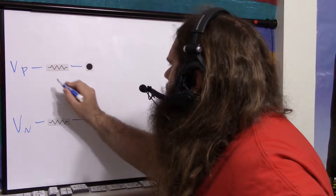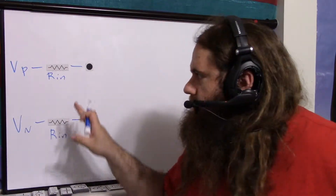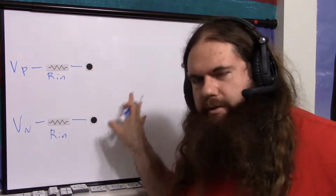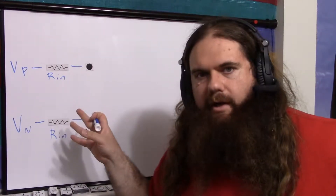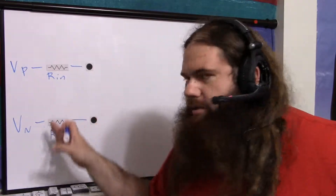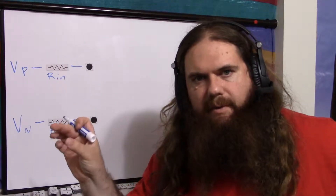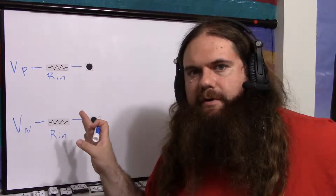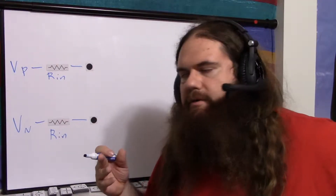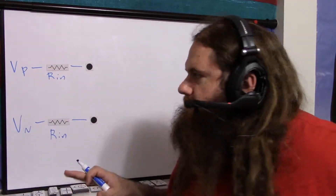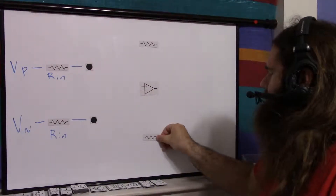We have standard input resistors and we'll call both of these R_in — they're the same value. There are four resistors total, and you can use different values for all of them, but the way to get a well-behaved simple A times (vp minus vn) is to use the two R_ins as the same value and the other two as the same value. With four different values the math gets gnarly and you'd have to use superposition, so we'll keep R_in equal and R_out equal.